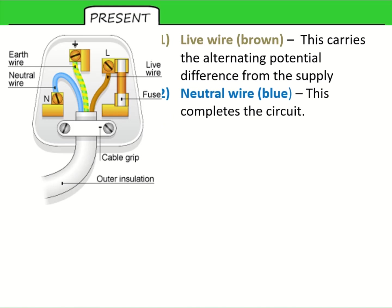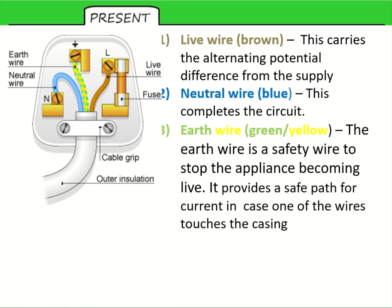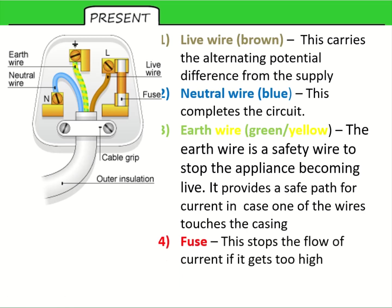The neutral completes the circuit. The earth is there as a safety feature — it stops the case of the appliance (not of the plug itself) from becoming live if a wire gets loose. You could have current going through the case and into you, so the earth provides a safe path for current to go to ground. Finally, we have the fuse — a thin wire which stops the flow of current if it is too high, again as a safety feature.